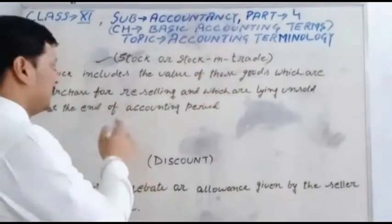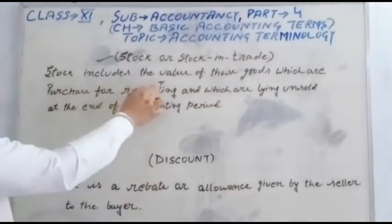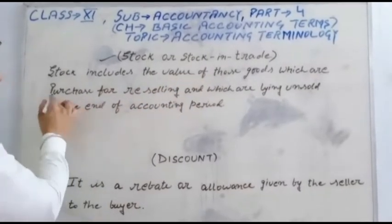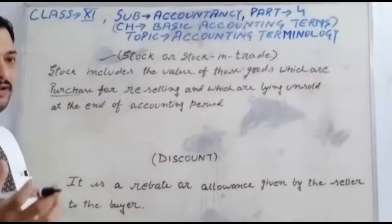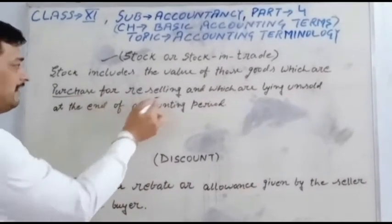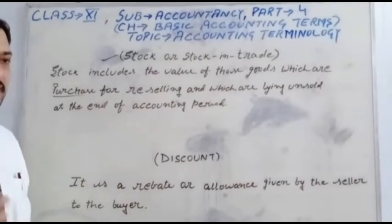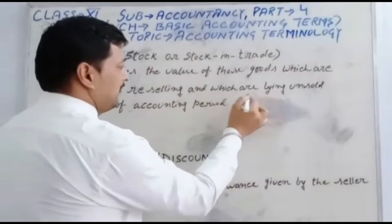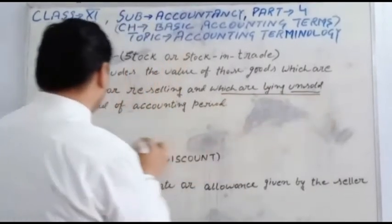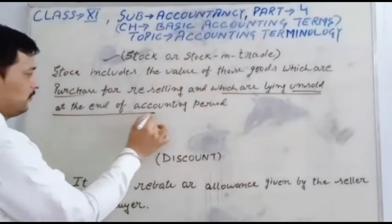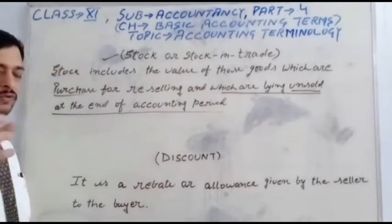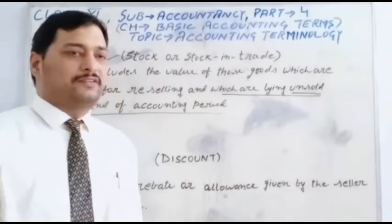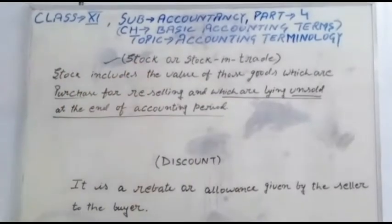Now let's see the board. Stock includes the value of those goods which are purchased for selling, purchased for the resale, and which are lying unsold at the end of the accounting year. Those goods are still remaining lying unsold — it is called a stock.